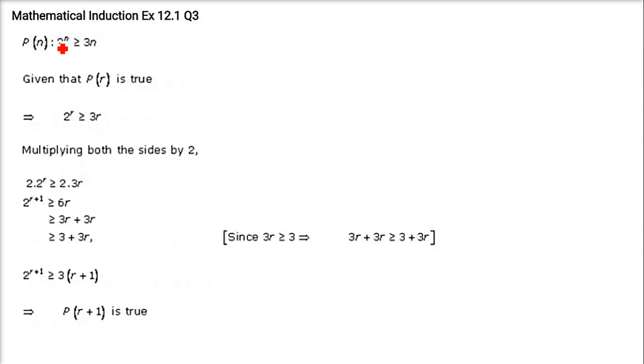If P(n) is the statement 2 to the power n is greater than or equal to 3n. If P(r) is true, we have to prove that P(r+1) is also true. So let us assume that P(r) is true. P(r) is true, that means 2^r is greater than or equal to 3r. So multiply both sides by 2.